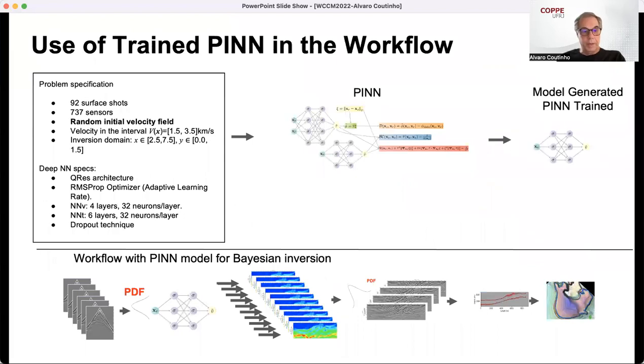After training the PINN using the workflow, we have the PINN here, and then we generate the model in training. So we have samples of seismograms. We run this for several iterations, we input this seismogram in the neural network and populate our stochastic space with several samples of possible velocity fields, and then we continue the workflow for the next stages.